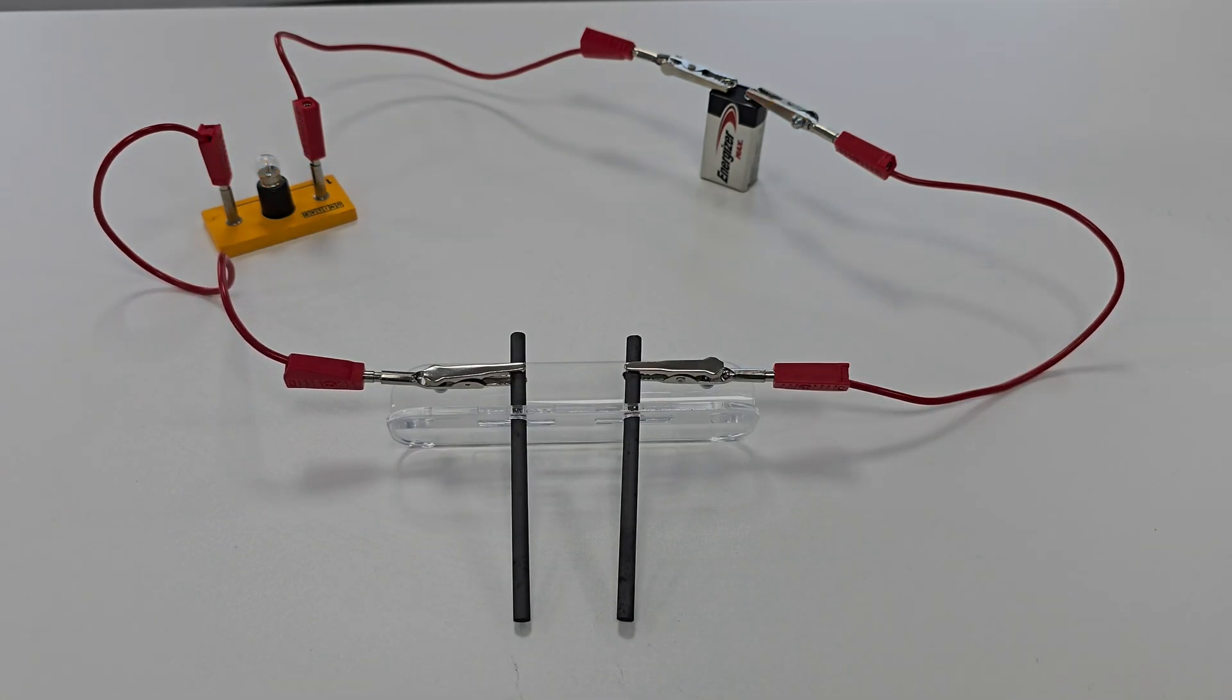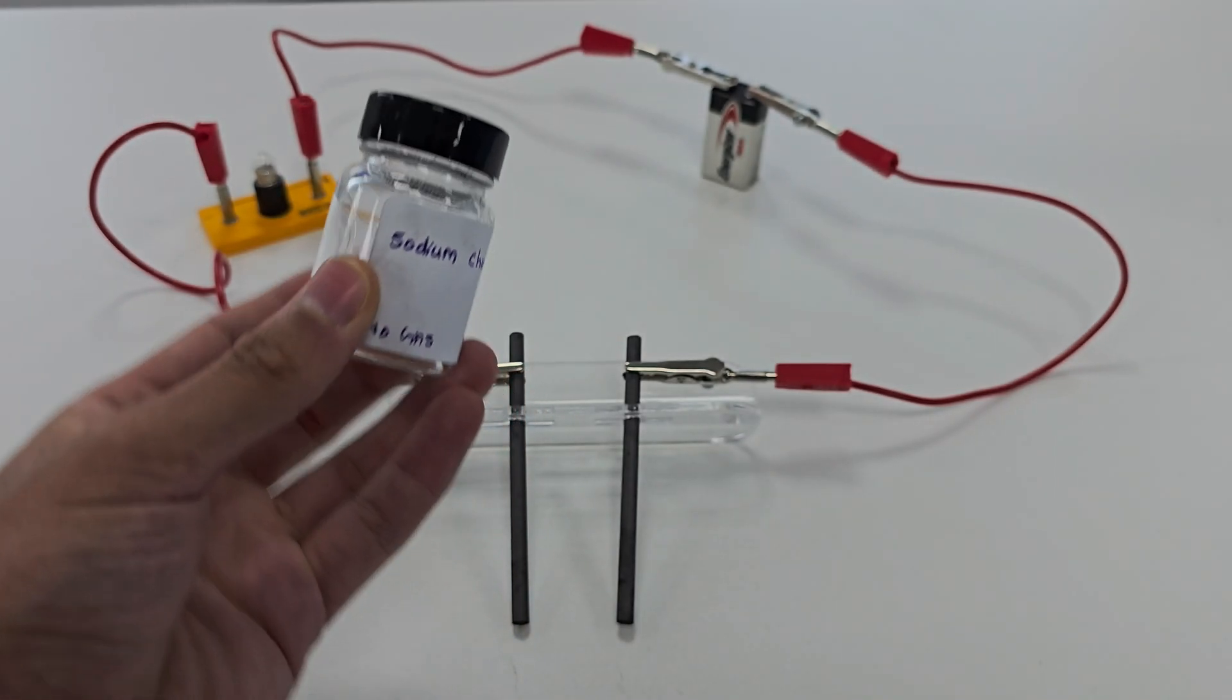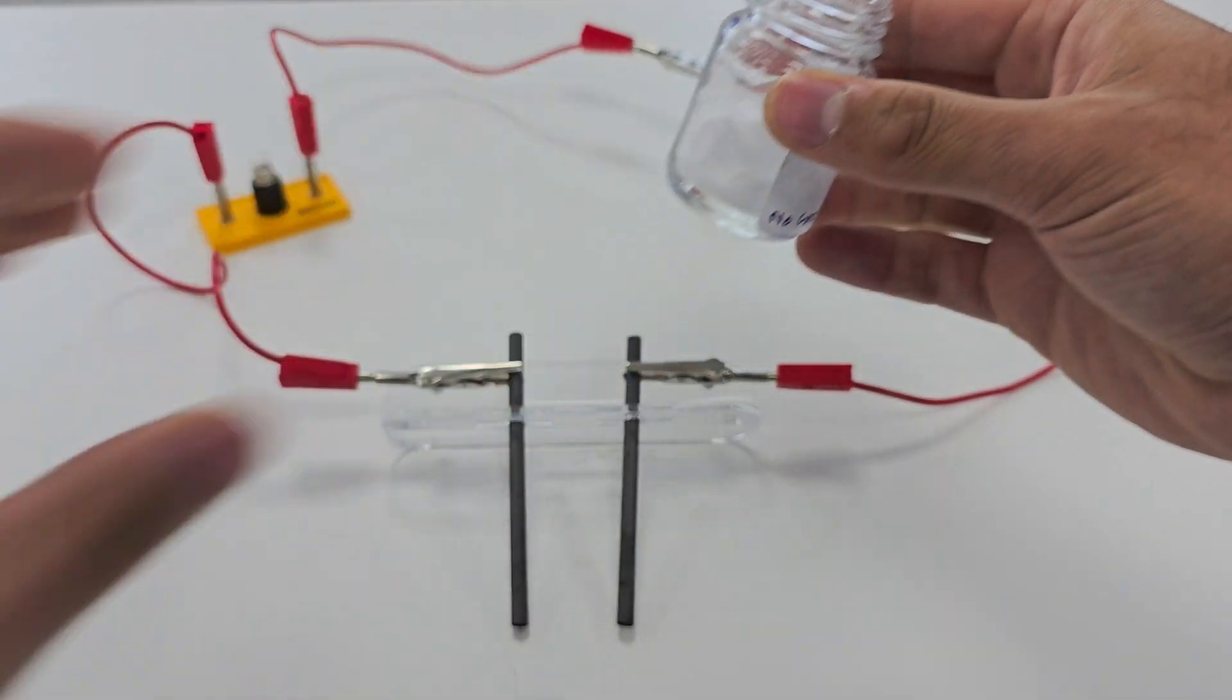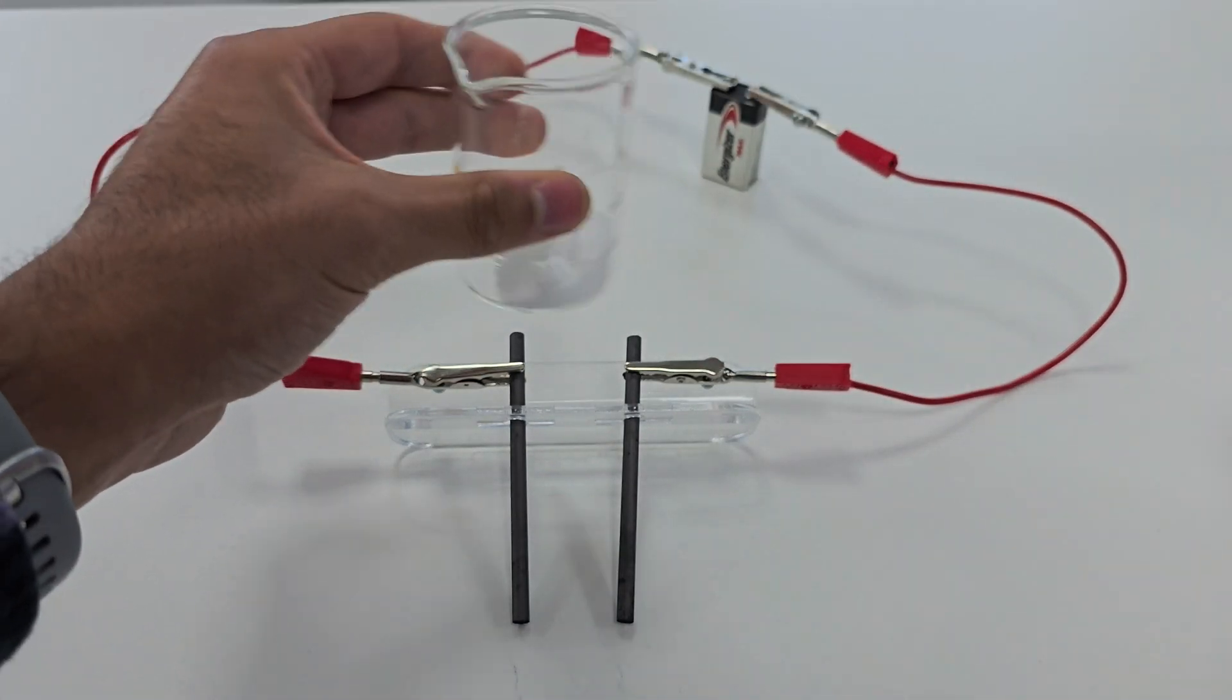Now let's test solid sodium chloride, commonly known as table salt. Ionic compounds are made up of positively and negatively charged ions held together in a strong lattice. In the solid state these ions are fixed in place and cannot move freely.